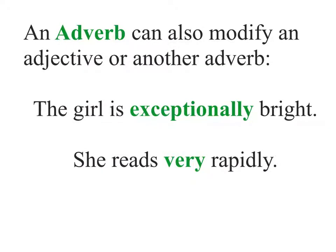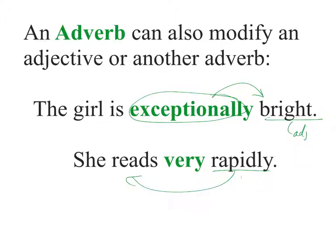Finally, an odd quirk about adverbs: an adverb can also modify an adjective or another adverb. In the sentence 'the girl is exceptionally bright,' bright is an adjective saying how smart the girl is, and the adverb exceptionally is modifying that adjective — not a verb. And in the second example, 'she reads very rapidly' — rapidly is an adverb answering how she reads, and very is an adverb modifying that adverb. Adverbs are quirky.